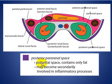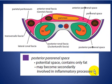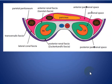The posterior pararenal space, shown in violet color, contains only fat. It is a potential space and is involved in the spread of inflammatory processes.